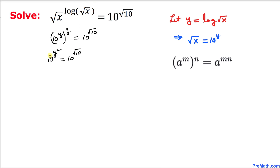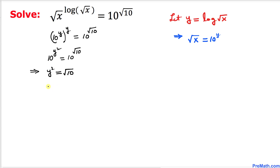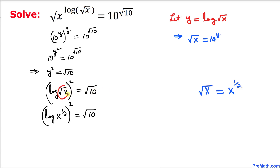We can see that our bases are the same on both sides, so we can equate the exponents. Therefore y squared equals square root of 10. But we know that y equals log of square root of x, so we substitute back. We can write: log of square root of x, squared, equals square root of 10. In the next step, square root of x can be written as x power 1 over 2.